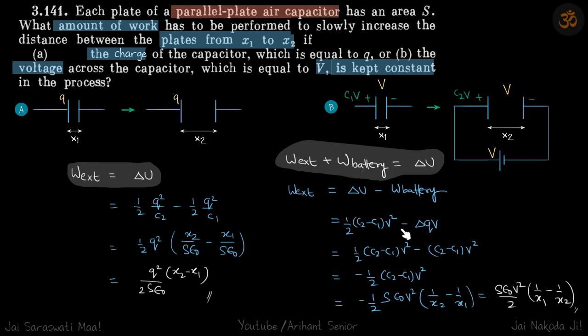So ΔU is ½(C₂ - C₁)V². And work done by battery is Δq into V.